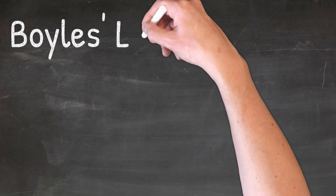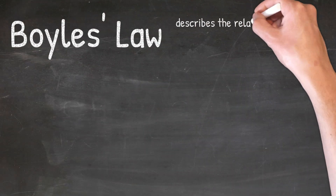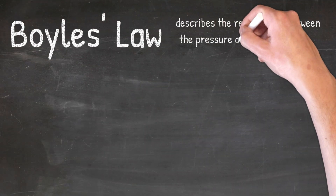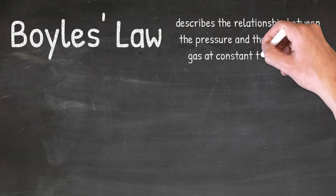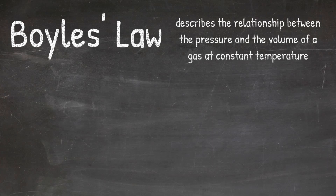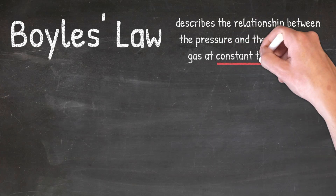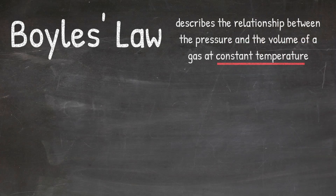Boyle's Law is a law that describes the relationship between the pressure and the volume of a gas at constant temperature. It is important to note that the temperature is remaining constant because if the temperature were changing, then that would also have an effect on the pressure and the volume of a gas.